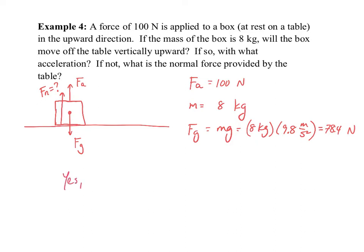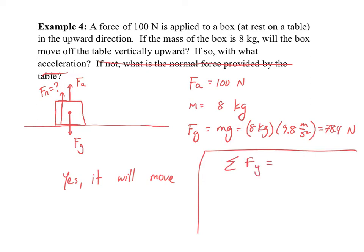Since the object lifts off, there is no normal force. Now we apply Newton's second law in the y direction: the sum of forces equals mass times acceleration. The free body diagram shows FA upward and FG downward. So FA minus FG equals MAy. Solving: ay equals FA over M minus g. The acceleration from the applied force alone would be FA divided by M, and gravity reduces it.